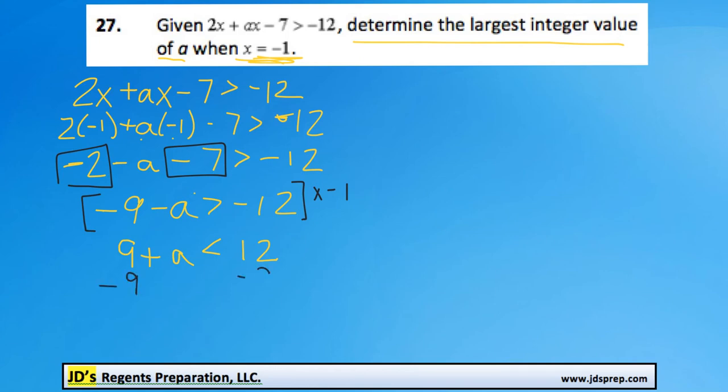And to isolate a completely, we're going to take away 9 from both sides. So we get that a is less than 3.